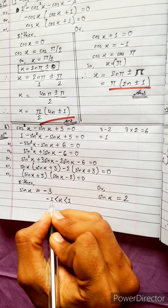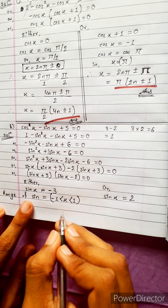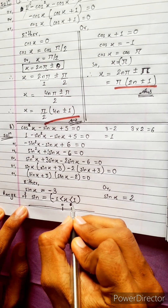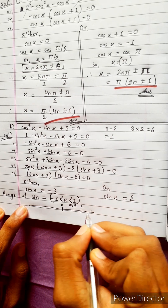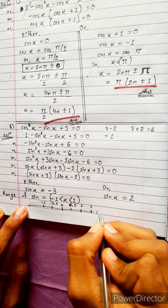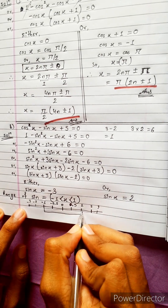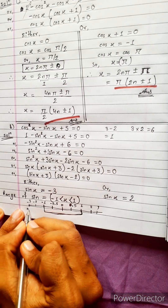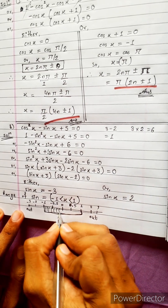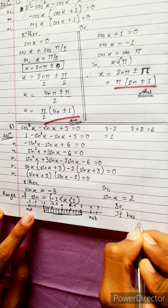Also sin x equals minus 1. The sine range is from minus 1 to 1. Minus 3 is out of range, and 2 is also out of range. So it has no solution.